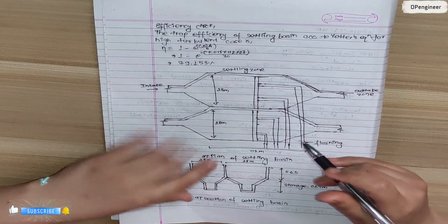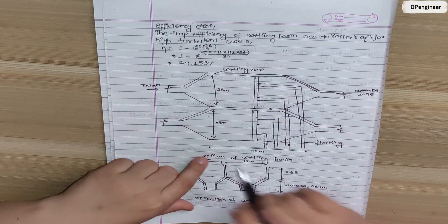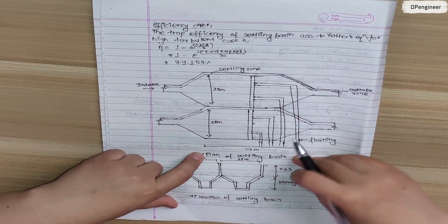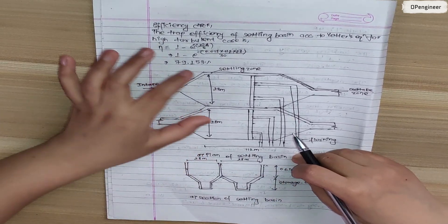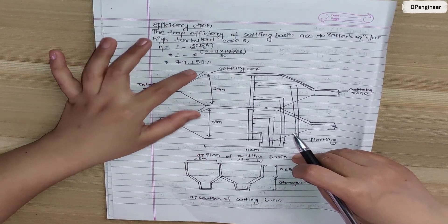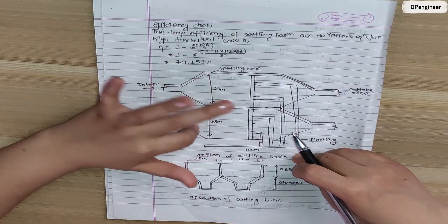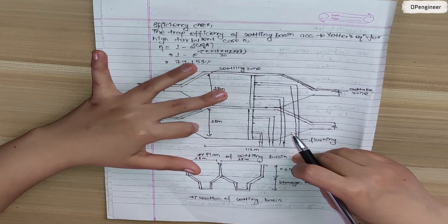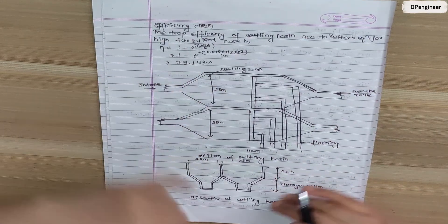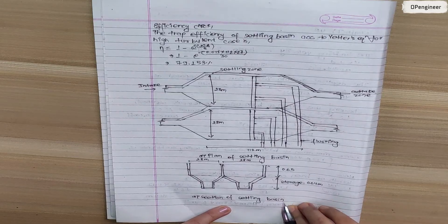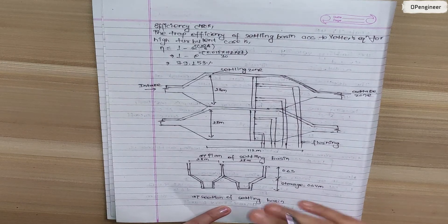In the plan view, the settling basin has a length of 112 meters and a width of 28 meters. We are also drawing the section of the settling basin with the same dimensions.